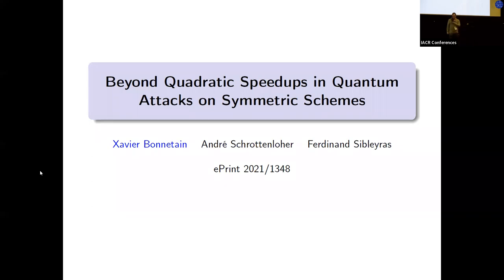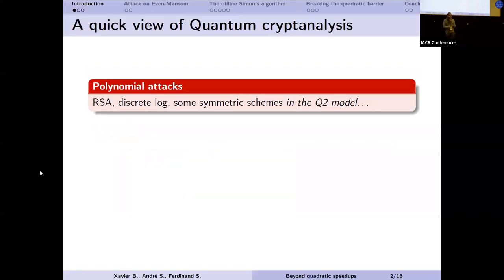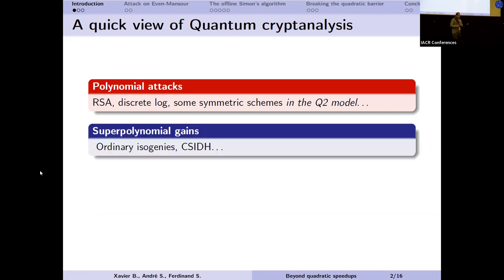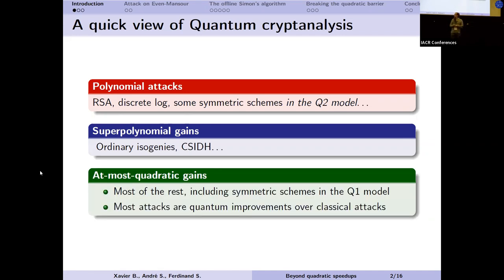Thanks for the introduction. I will give a bit of context by presenting a quick view on quantum attacks in cryptography. We can separate mostly three big families. The first is the bad news: quantum polynomial attacks on classically secure schemes, the most notorious examples being RSA or discrete logarithm. This is also the case for some symmetric schemes in the Q2 model with quantum queries. We also have an annoying case with some super-polynomial gap with a quantum algorithm compared to classical.